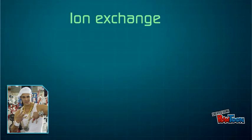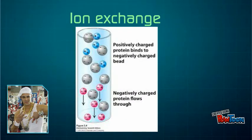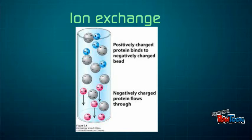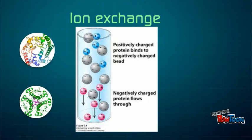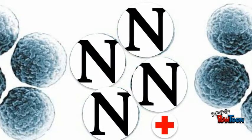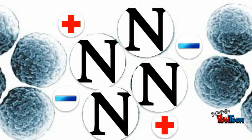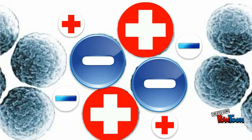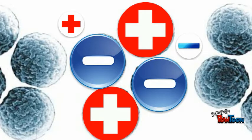Ion exchange chromatography is used to separate molecules based on the charge that they take on at various pH values. It can be used to separate anything from whole proteins to amino acids. The first step is to fill a column with resin beads of a neutral charge, and then those beads are given a charge opposite to that of the desired molecule using elution buffers, so that the undesired molecules exit first while the desired molecules stick to the resin beads.